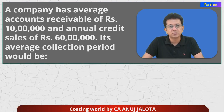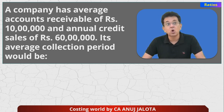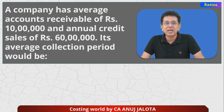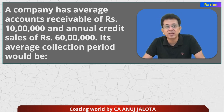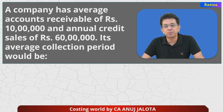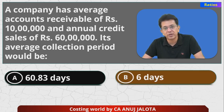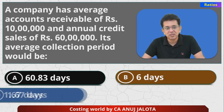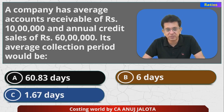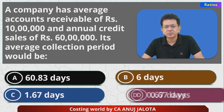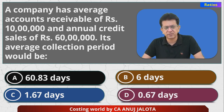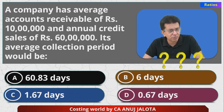Let's try to see this: a company has average accounts receivable of 10 lakh rupees and annual credit sales of 60 lakhs. Its average collection period would be — the four options are: 60.83 days, six days, 1.67 days, and lastly 0.67 days. So, average collection period — let's come over to that.